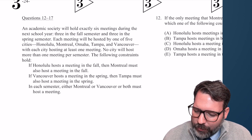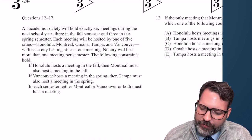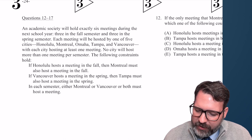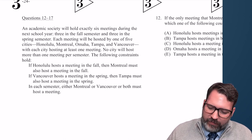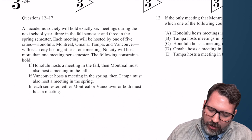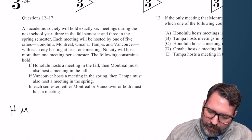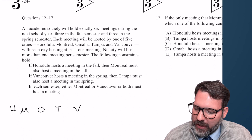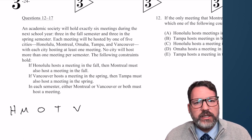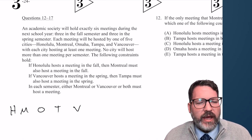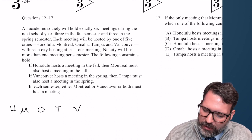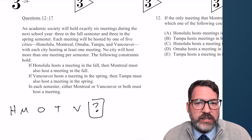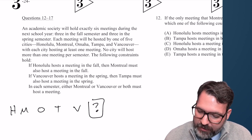An academic society will hold exactly six meetings during the next school year — three in the fall semester, three in the spring semester. Each meeting will be hosted by one of five cities: H, M, O, T, N, V, with each city hosting at least one meeting. We've got six spaces but five elements, so basically one of these five cities goes a second time, accounting for our six full spaces.